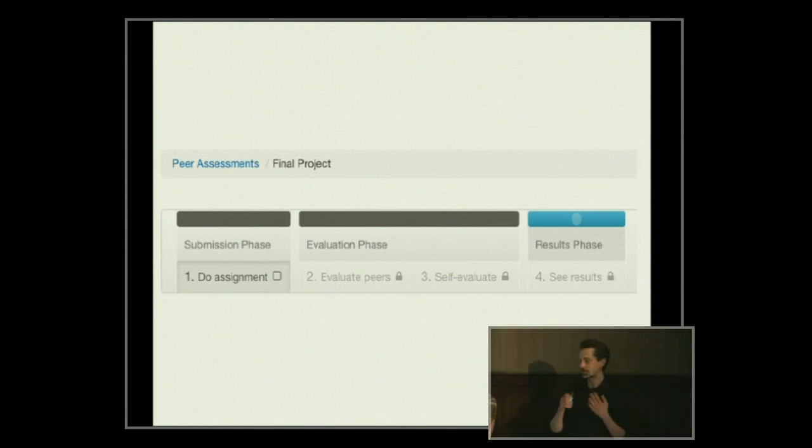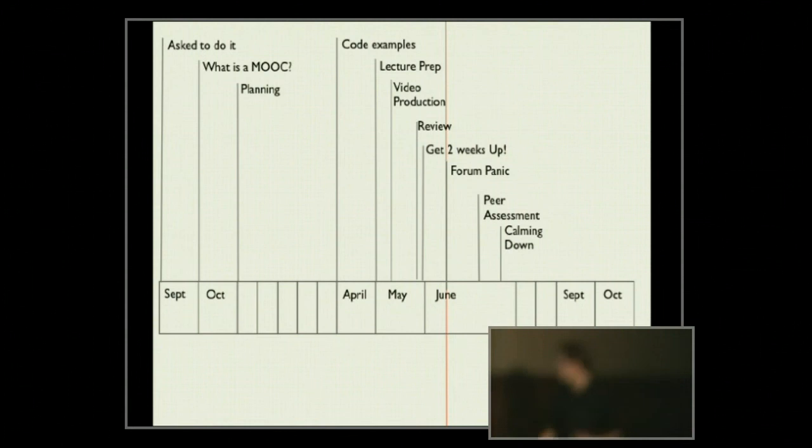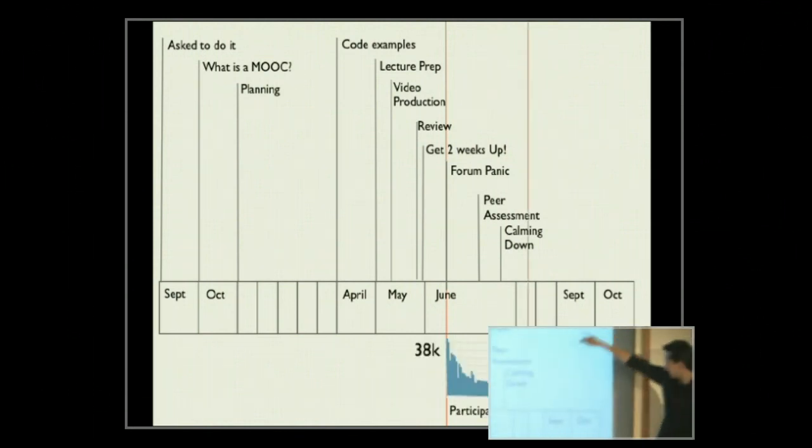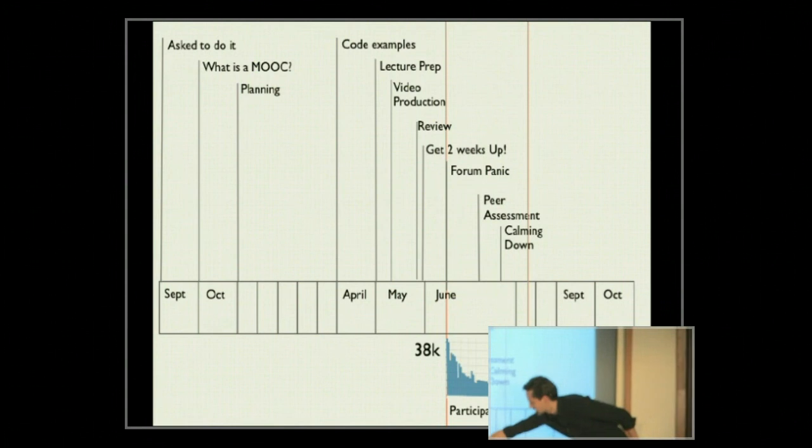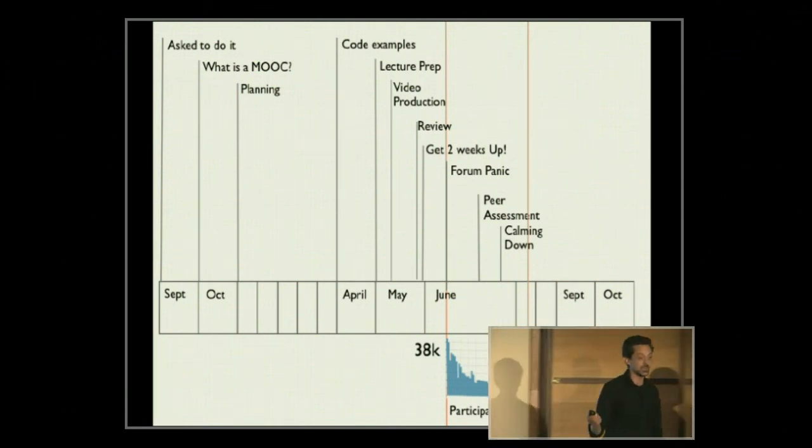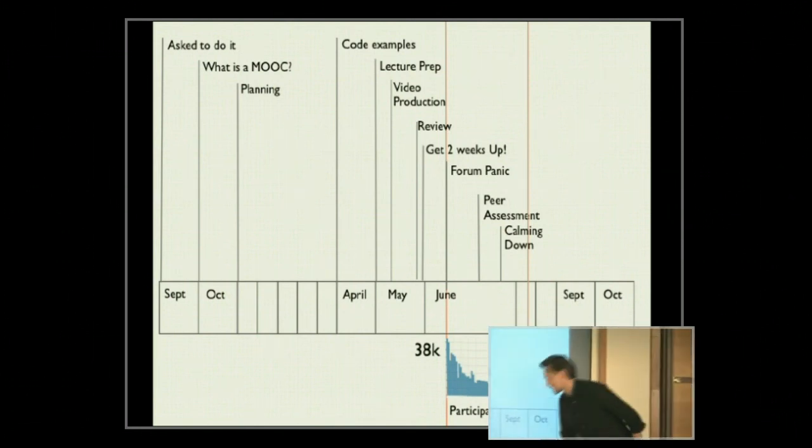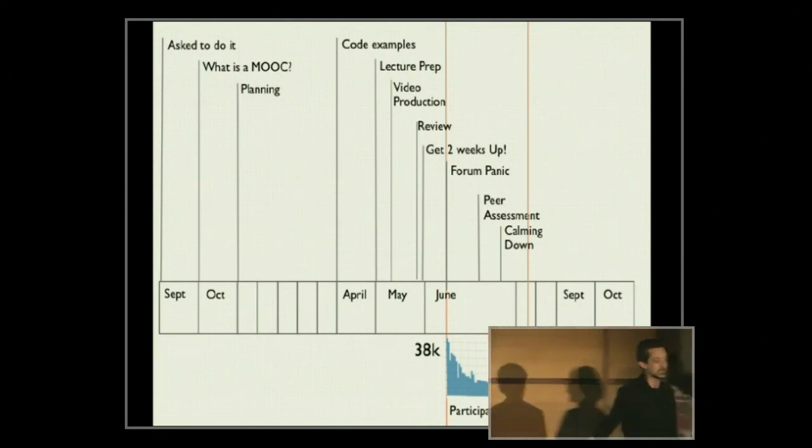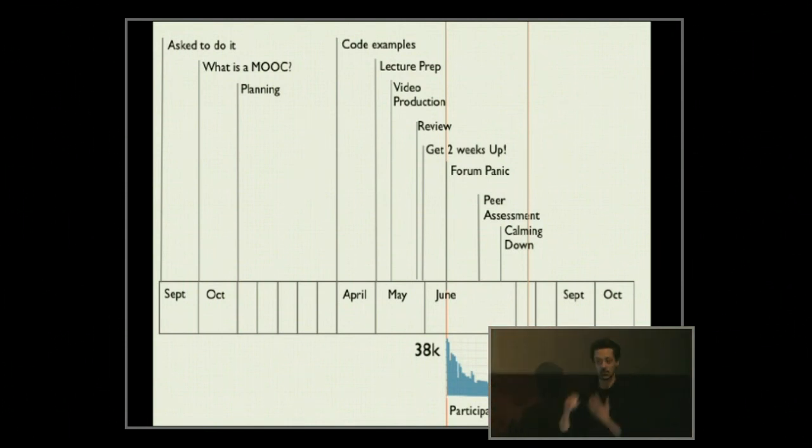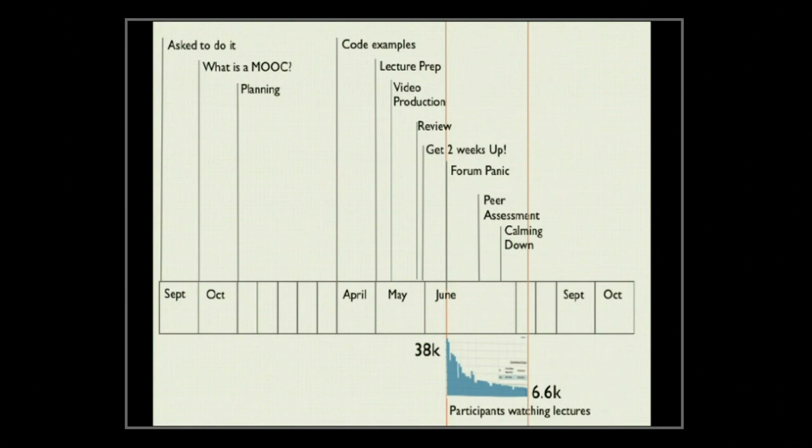At this point, staff started calming down. This is the end point, mid-July, and this is the number of active students, 38K. We said there were 95,000 enrolled. Only 38K were actually active, and that dropped right down to 6.6K by the end of the course. Exactly as Lindsay said this morning, people are dropping out, and you're not alone. Almost everybody is dropping out of the MOOC, and this is not very atypical at all. 6.6K is still a massive number of students, still more than they've ever taught in the history of teaching live.